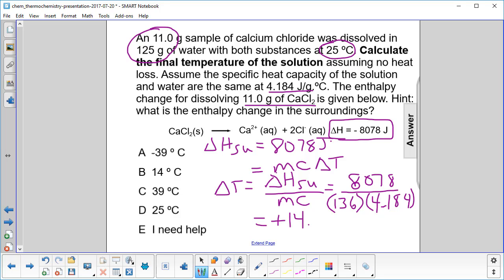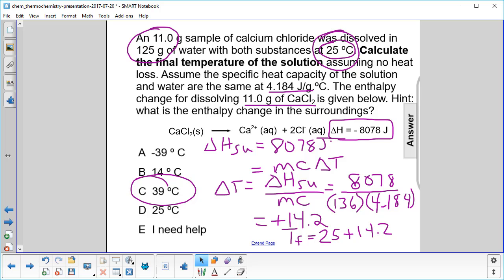So that's the answer. No it's not. That's delta T. What did we start at? We started at 25. So to find our final temperature, we have to take the initial, which is 25, plus the change, 14.2, and what do we get? To significant figures, we get 39 Celsius. The answer is C.